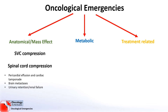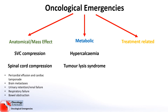Blockage of the urinary tracts, if left untreated, can cause kidney failure. Respiratory failure can occur if tumours prevent the function of the lungs. And bowel obstruction can also lead to very serious consequences. The second category, metabolic emergencies, includes hypercalcaemia and tumour lysis syndrome.